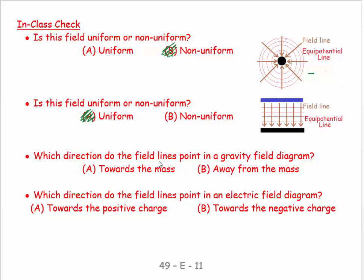Is this field uniform or non-uniform? This is the classic uniform field. The field lines go from the positive charges towards the negative. We have uniformly spaced field lines and uniformly spaced equipotential lines. In which direction do the field lines point in a gravity field diagram? The field lines point towards the mass, they point towards the earth.